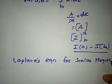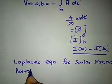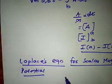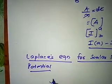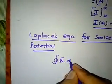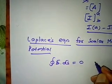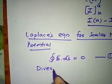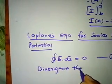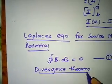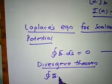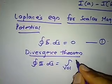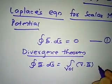Next, we derive Laplace's equation for scalar magnetic potential. We know that the closed surface integral of B-bar dot dS-bar equals zero. Applying the divergence theorem, this surface integral is converted into a volume integral: del dot B-bar dV equals zero.